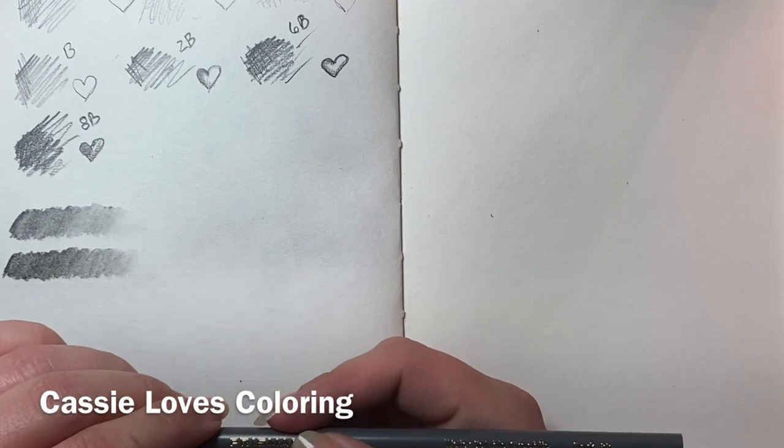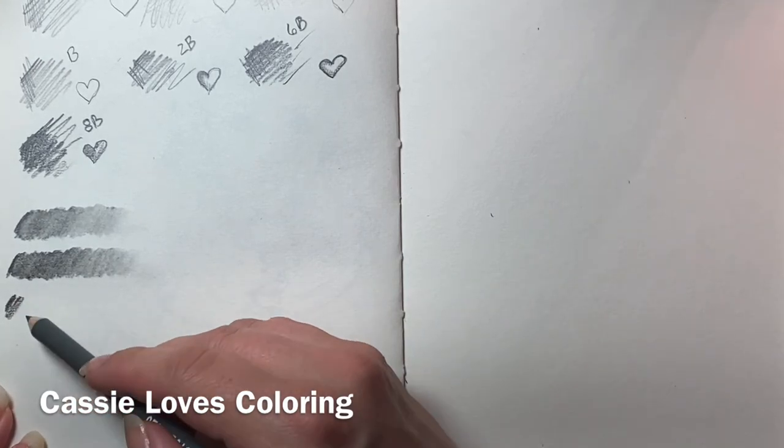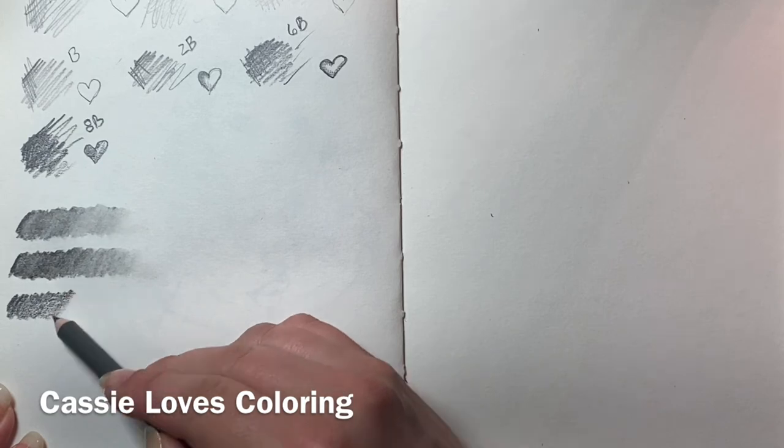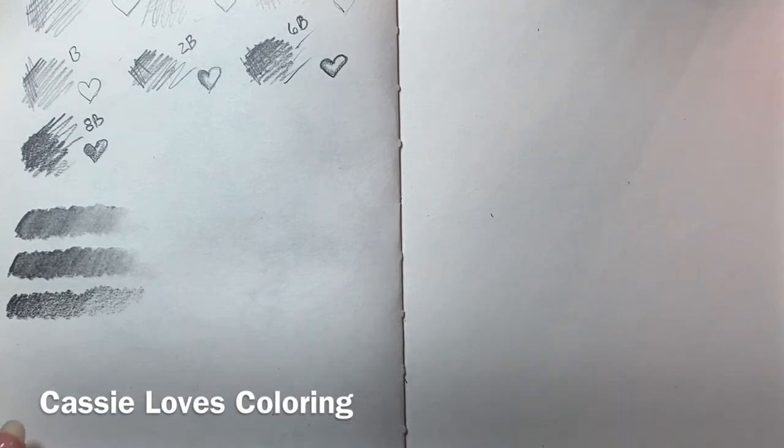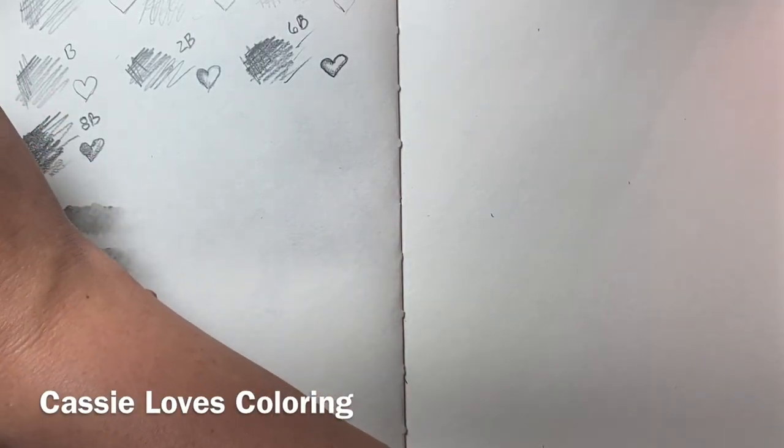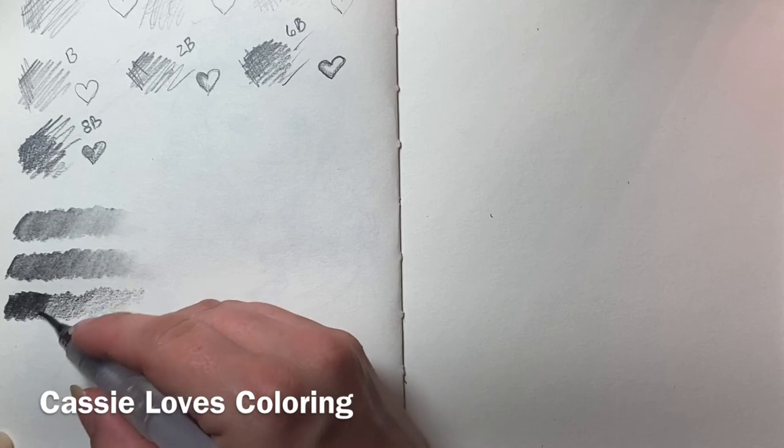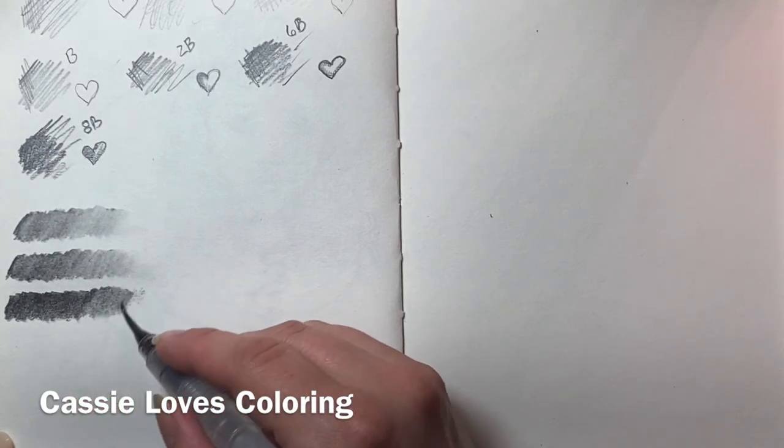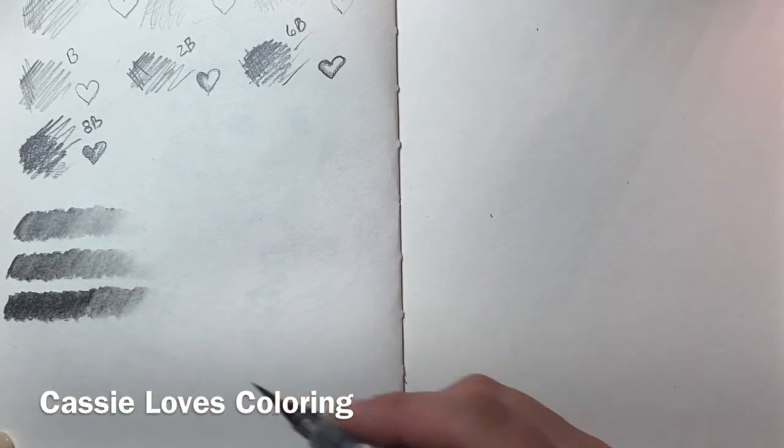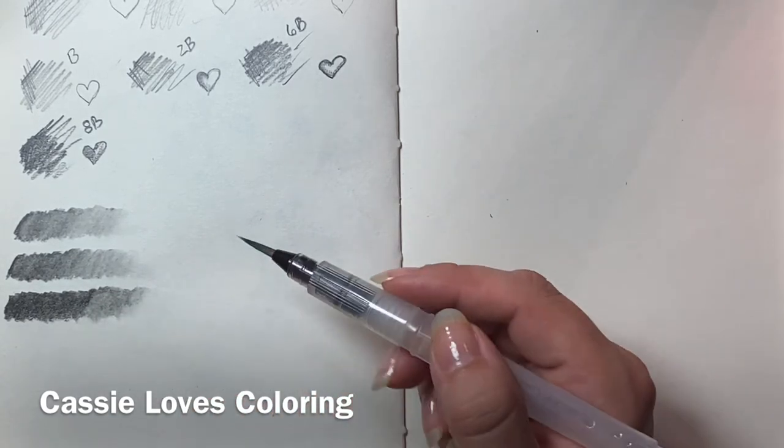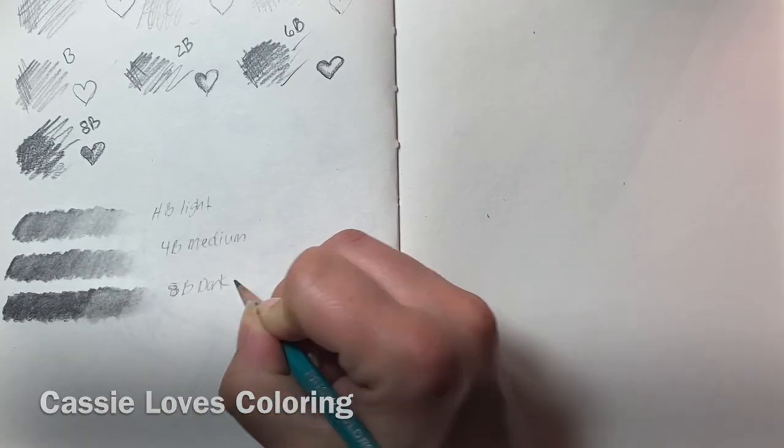This is the 8B dark. Okay start off again hard pressure and create a gradient. And you can't really tell until you put the water on how dark it's gonna be. But you see that, that is some crazy stuff right there. I mean it's just, and it's spreading really nicely like it's not leaving a whole ton of pencil texture.